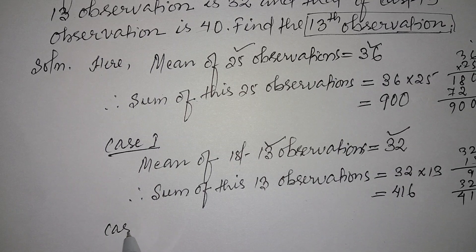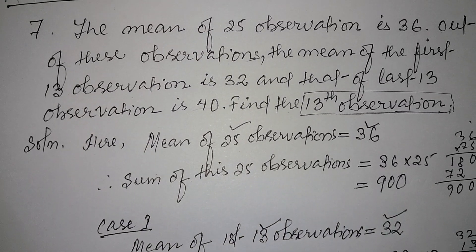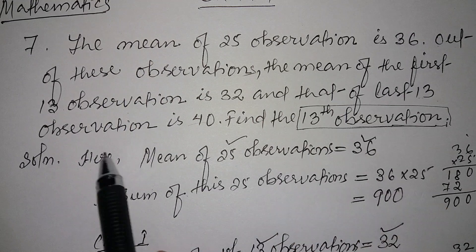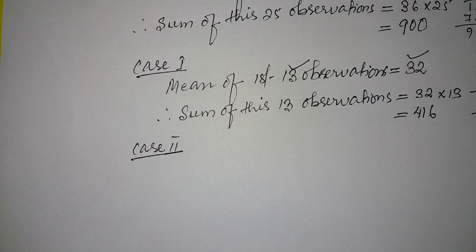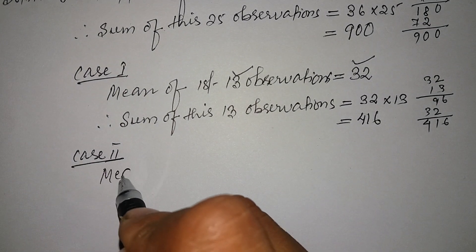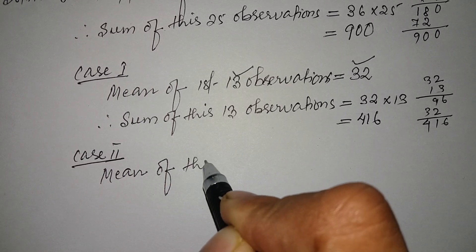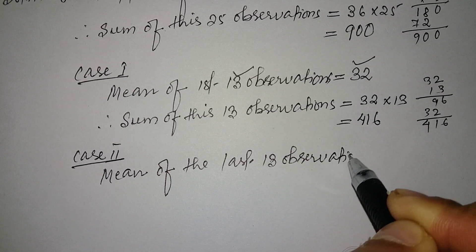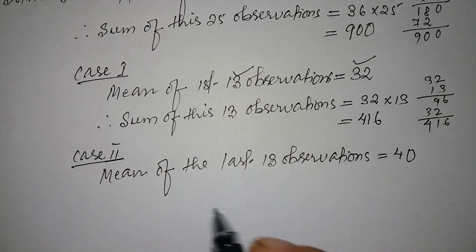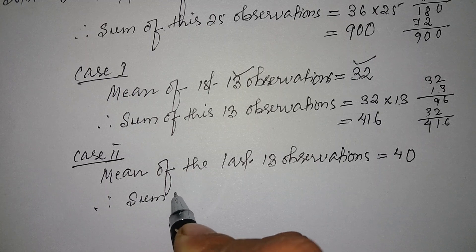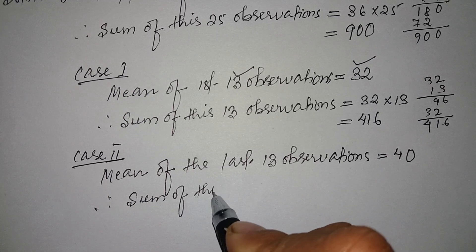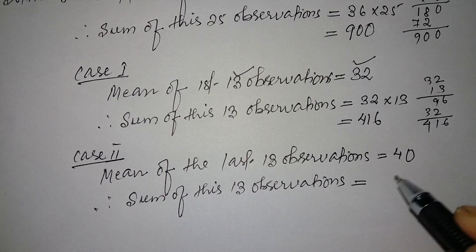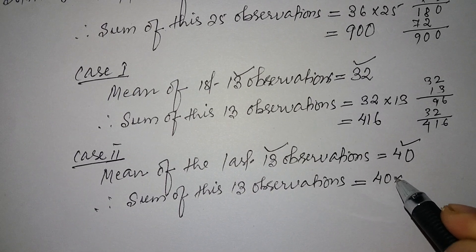In the second case, the mean of the last 13 observations is 40. Therefore, the sum of the last 13 observations is equal to mean into number of observations, which is 40 into 13, giving us 520.